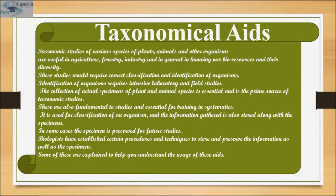Taxonomical studies of various species of plants, animals, and other organisms are useful in agriculture, forestry, industry, and in knowing our bio-resources and their diversity. These studies require correct classification and identification of organisms, as well as intensive laboratory and field studies. The collection of actual specimens of plant and animal species is essential and is the prime source of taxonomy studies.